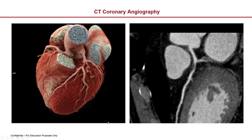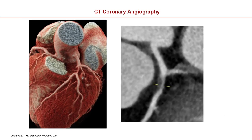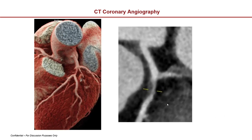Here's an example of a stenosis that is more than 50%. You can see it's very narrowed, and there is a soft plaque — a rupturable plaque that could potentially break off and subsequently block one of these diagonals distally, which could cause myocardial infarction, otherwise known as a heart attack.